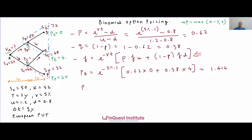Similarly for node C: nodes E and F feed into C. PC = e^(−5% × 1) × [0.62 × PE + 0.38 × PF] = e^(−0.05) × [0.62 × 4 + 0.38 × 20]. Solving gives a value close to 9.46.